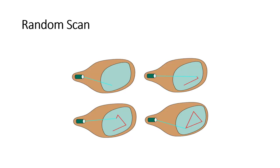Next we move on to random scan displays, which is one type of CRT display. In these displays the image is generated from a sequence of straight line or curved segments. After drawing the entire image, the system cycles back to the starting point and redraws the whole image again. This occurs 30 or 60 times per second depending on the refresh rate. The image must be redrawn repeatedly within a very short time to retain it in our vision, as the glow expires after only a few microseconds.